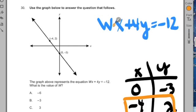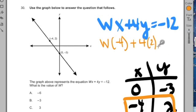Let's say I put when x is negative 4, I'm going to input that value into my equation now. When x is negative 4 and y is 2, well, let's rewrite that so it doesn't get all jumbled. So that would be w times negative 4 plus 4 times 2. I'm just inputting in my x and y values. That equals negative 12.